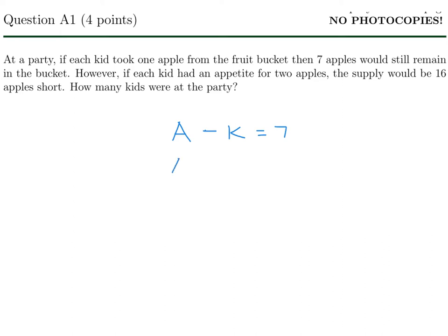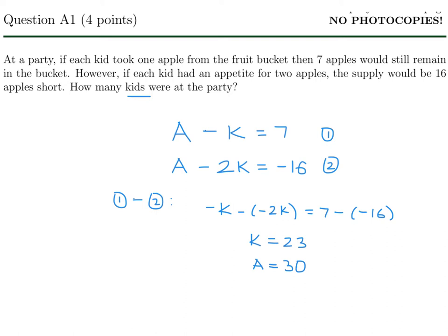The second sentence, we make the equation A minus 2K equals minus 16. Those are our two equations and with those we can solve for A and K. I'll call this equation 1, I'll call this equation 2. So if I do 1 minus 2, I can solve this pretty quickly. That would give me minus K minus minus 2K and 7 minus minus 16, which is just K equals 23. Therefore A would be 30. And what do they want? The number of kids. So that's just 23.